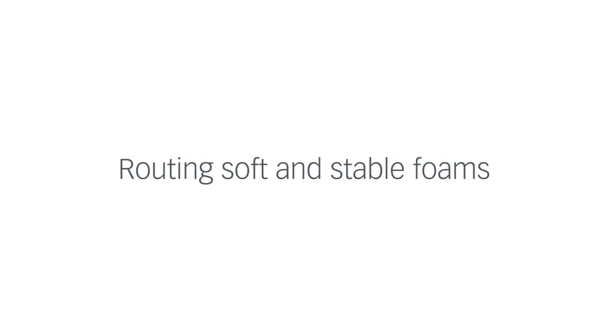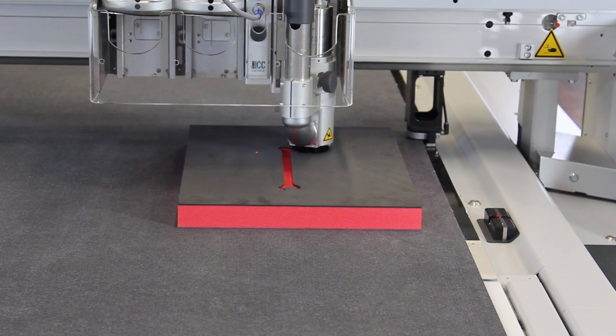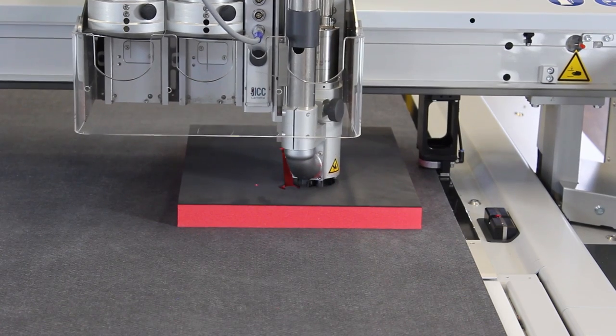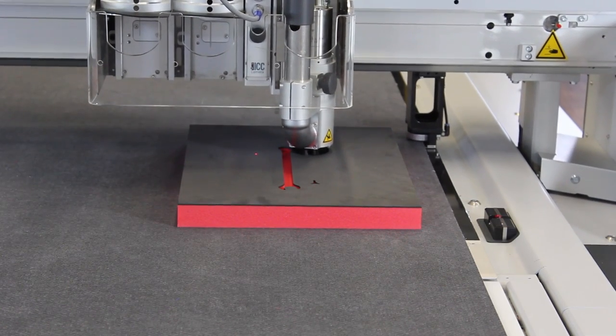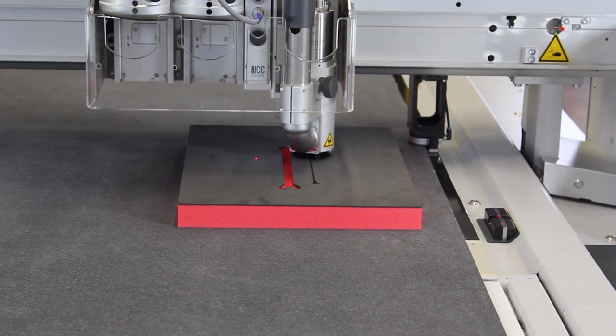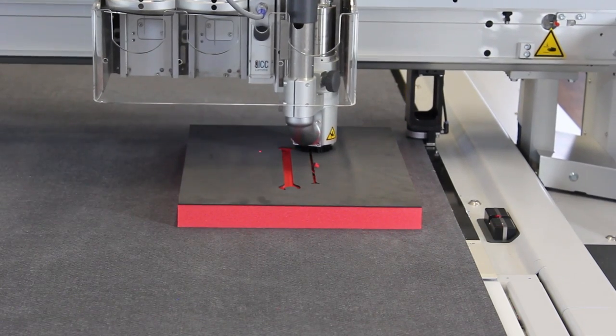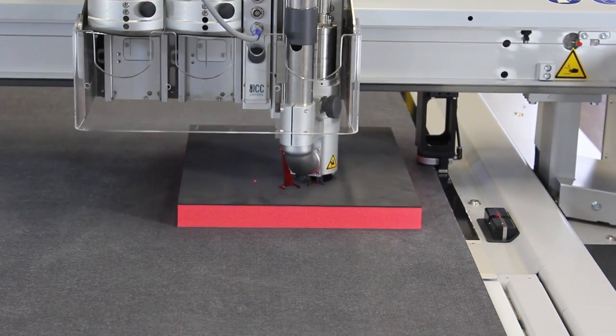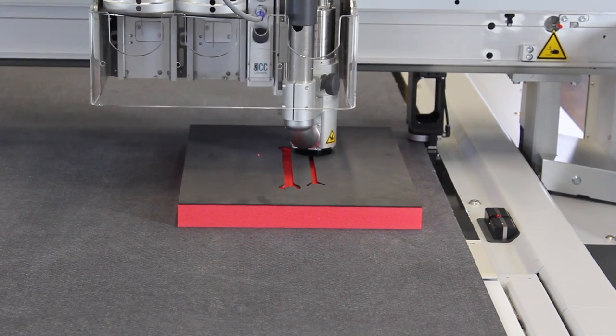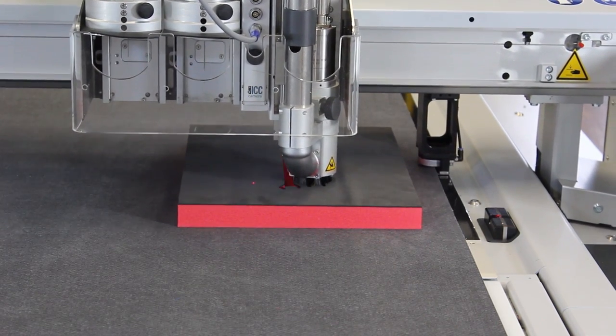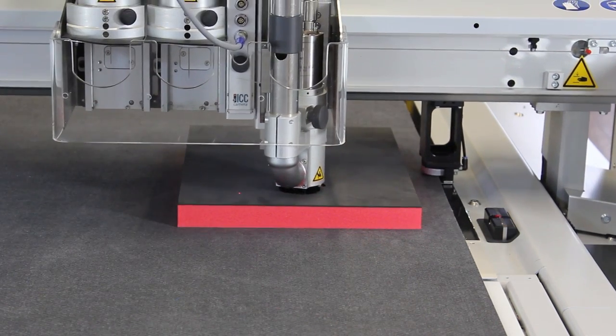Routing Soft and Stable Foams. Sünd also offers the option to use a router for cutting foam. Dimensionally stable foam can be processed at high speed. The cleanup pass should be performed at the suggested maximum speed of 50 mm per second.